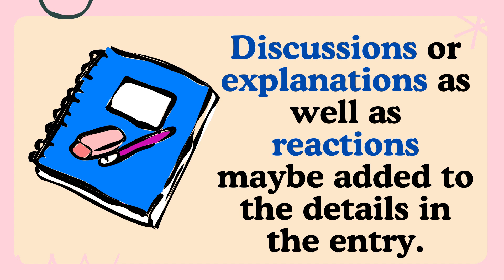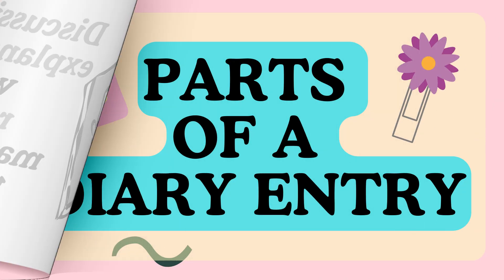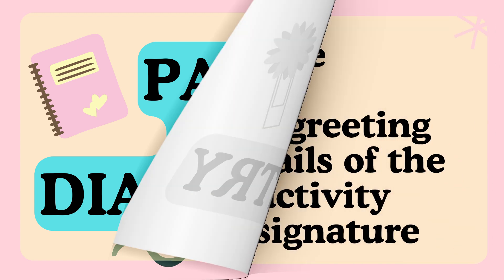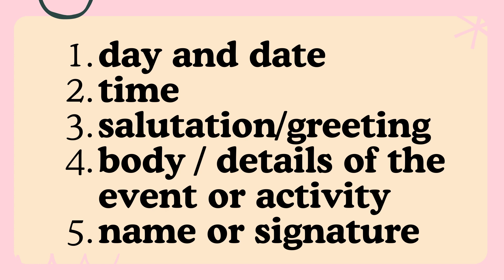The diary entry primarily starts with a sentence describing the day's events or one's experiences. Discussions or explanations as well as reactions may be added to the details in the entry. Parts of a diary entry: A diary entry has the following parts — 1. Day and date, 2. Time, 3. Salutation or greeting, 4. Body — details of the event or activity, 5. Name or signature.